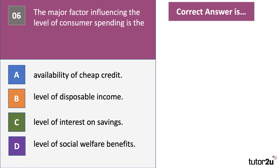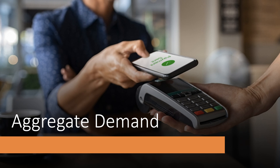Our final question: the major factor influencing the level of consumer spending is what? The evidence strongly shows that the main factor is the level of disposable income — income after direct taxes and welfare benefits. Keynesians talk about the consumption function, where consumption is directly linked to the level of real household disposable income. Yes, the interest on savings, the availability of credit, and the level of welfare all matter — but disposable income is the key factor determining consumer spending, which is in most countries the main factor affecting aggregate demand.